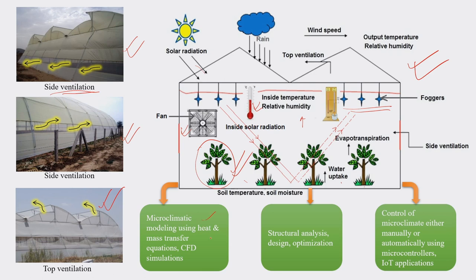Microclimatic modeling using heat and mass transfer equations and CFD simulations often helps us understand or optimize the environmental conditions inside the greenhouse. Structural analysis and design optimization of the greenhouse is an important parameter, as this kind of investment is made for years, possibly a decade or more, requiring significant management, monitoring, and skilled manpower. Control of microclimate — temperature, fog, humidity — can be carried out either manually or automatically using microcontrollers, and these days we also have IoT. This means the structure can be managed by one or two well-trained persons.